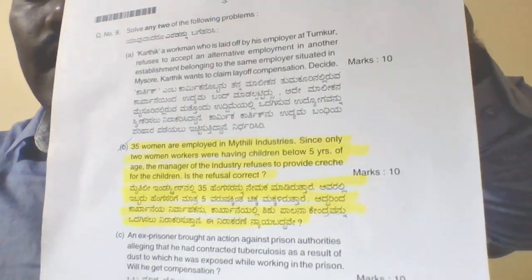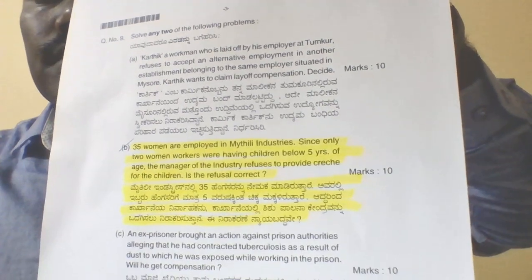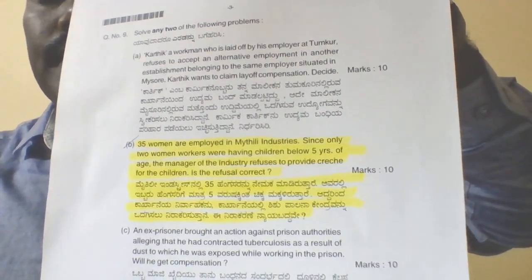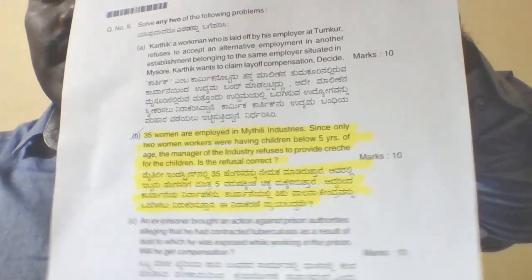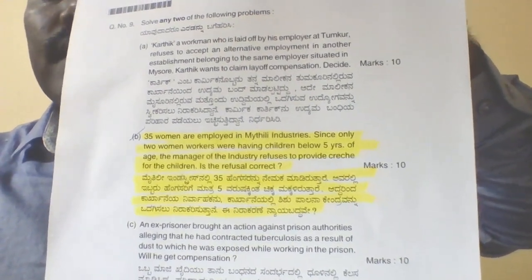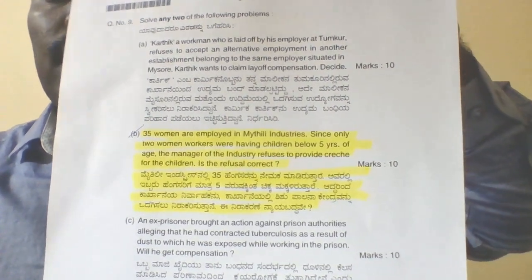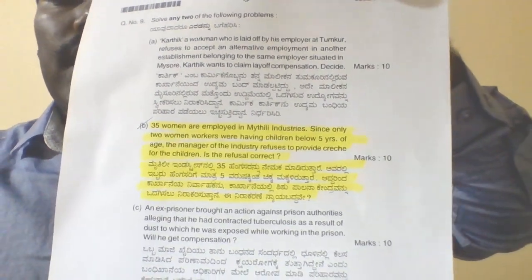For your reference, I made a highlighter. This is the question. Earlier it was asked for ten marks, but now it is six marks — problems will be asked for any law. So I will explain how to write it. 35 women are employed in Middili Industries. Since only two women workers were having children below five years of age, the manager of the industry refuses to provide a creche for the children. Is the refusal correct?